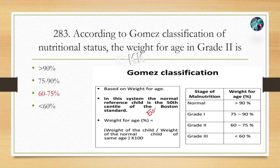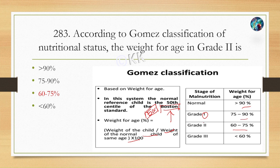In this formula, we divide the weight of the child by the weight of the normal child of the same age (Boston standard) and multiply by 100. If the result is 90% or above, it is normal. If the result is 75–90%, it is grade 1 malnourishment. If the result is 60–75%, it is grade 2 malnourishment.